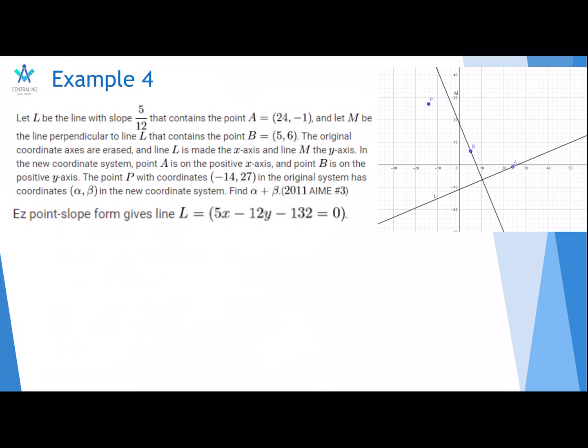Here's the diagram. Using point slope form, get the equation of line L. It's 5X minus 12Y minus 132 equals 0. You want it in standard form because you need to find the distance. And similarly, since the slope of M is negative 12/5 because perpendicular lines have slopes that multiply to negative 1, you get that line M has equation 12X plus 5Y equals 90.